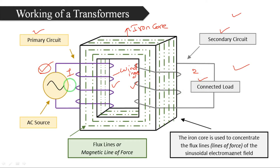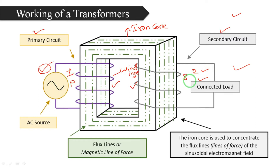The primary winding is represented as N1 — P for primary. The secondary winding is represented as N2 — S for secondary. The source is connected to the primary winding and the load is connected to the secondary winding.